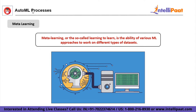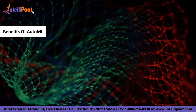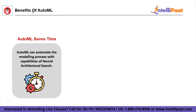Moving forward, we'll talk about the benefits of AutoML. The first benefit is that AutoML saves time. Data scientists manually test models, tune hyperparameters, and evaluate models to arrive at the best model for a particular problem. With AutoML, the process can be done automatically — in less time — by transferring the data into the training algorithm to automatically search for the best suitable neural network architecture for any concerned problem.